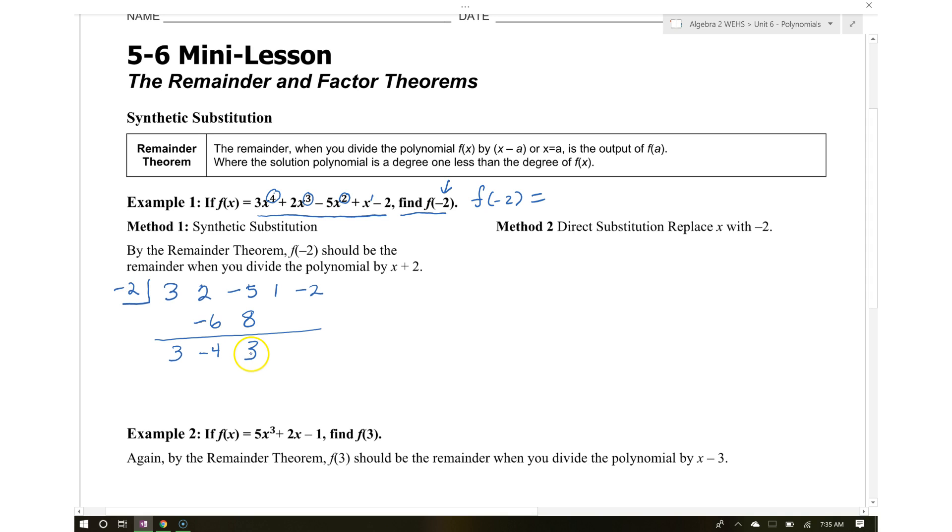Negative 2 times 3 gives you negative 6. Then 1 minus 6 gives you negative 5. Negative 2 times negative 5 gives you 10, and negative 2 plus 10 gives you 8. This is the remainder, so f of negative 2 equals 8.